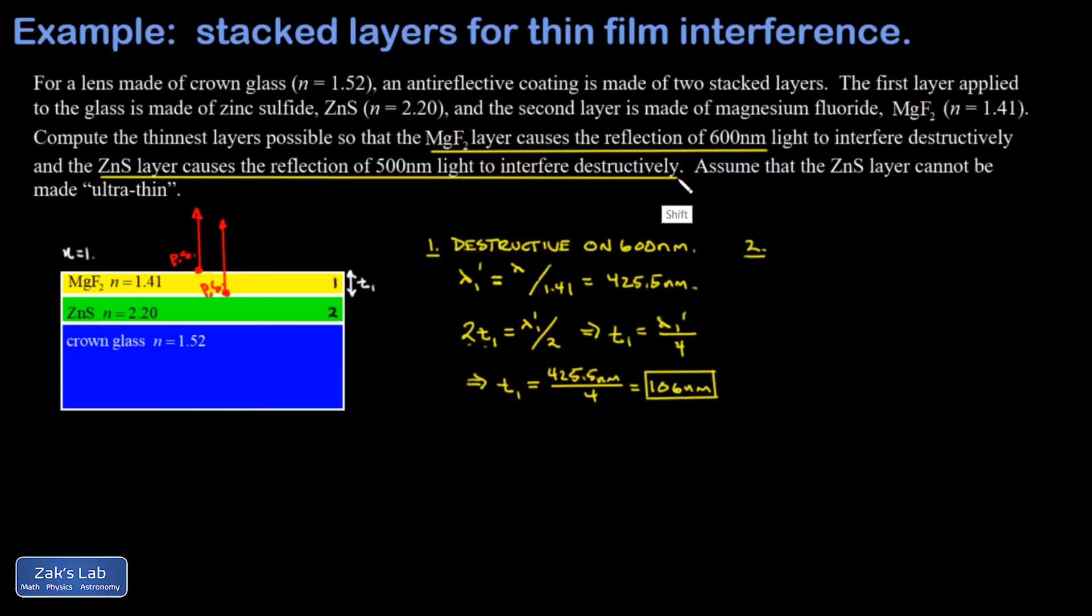Next we're going to look at reflections off of that zinc sulfide layer, and we want 500 nanometer light to interfere destructively off of that. To prepare ourselves, we need to compute the wavelength of our original light, which was 500 nanometers. That's lambda over 2.20. I get 500 over 2.20, which comes out to 227.3 nanometers.